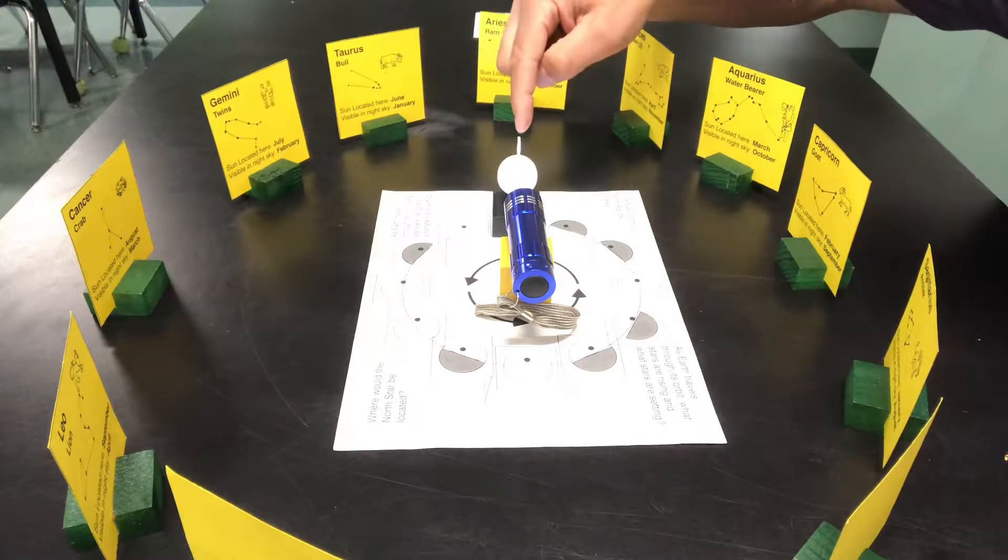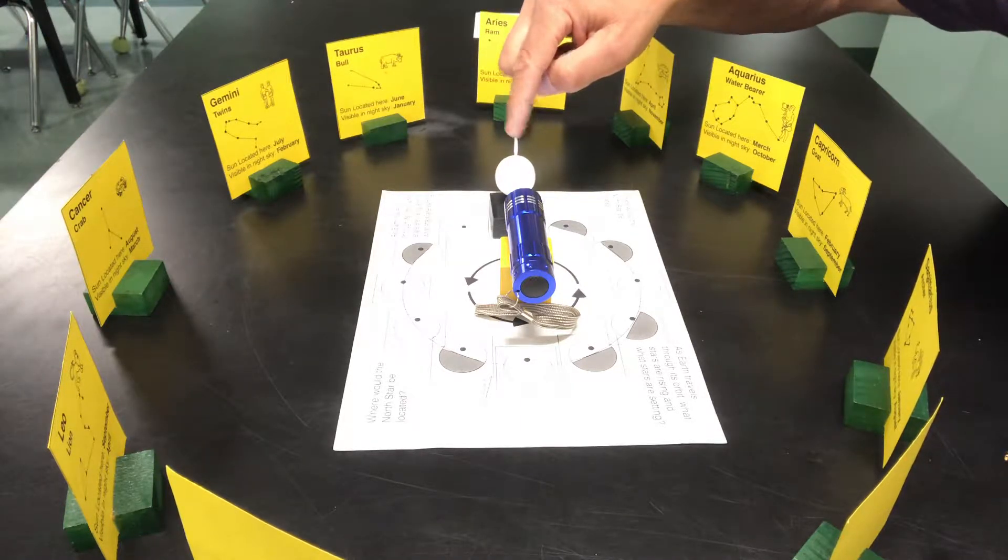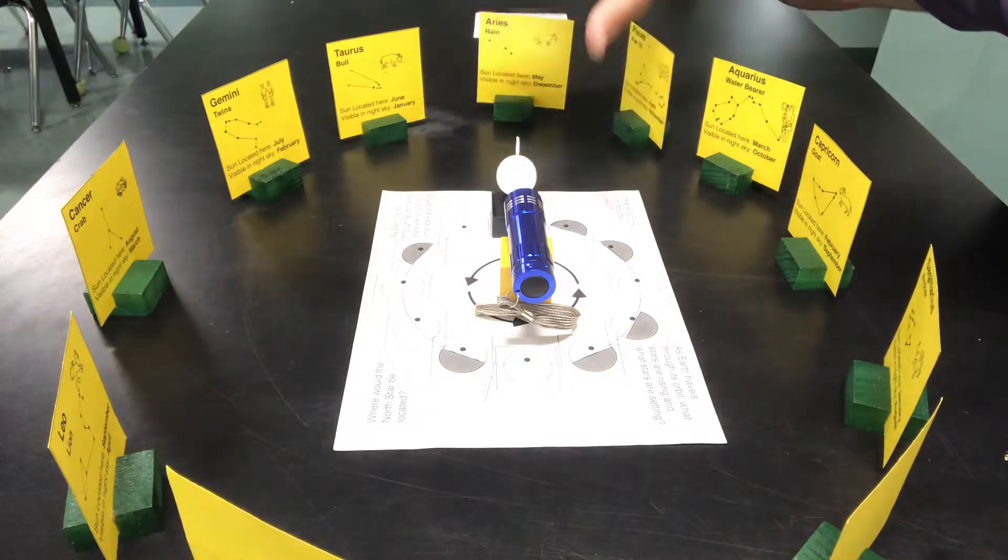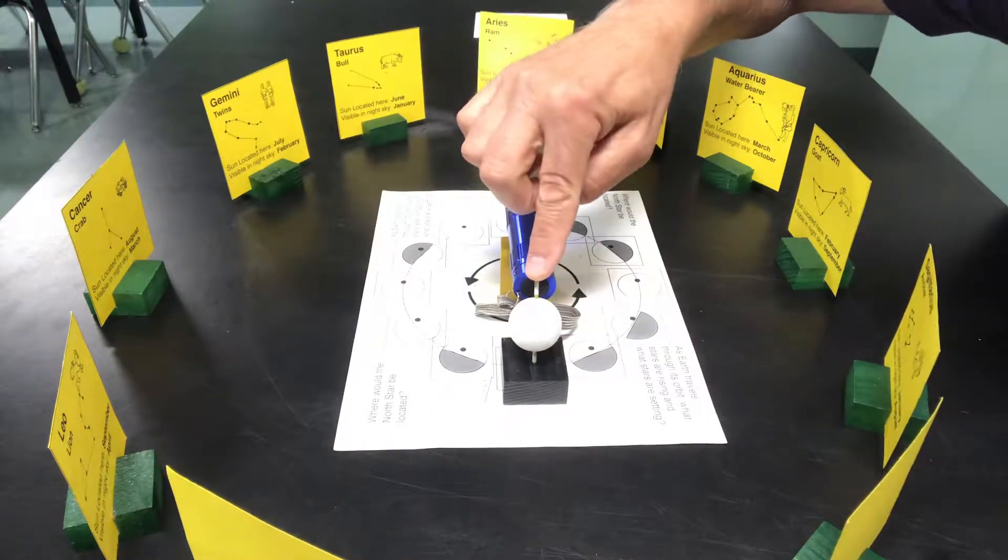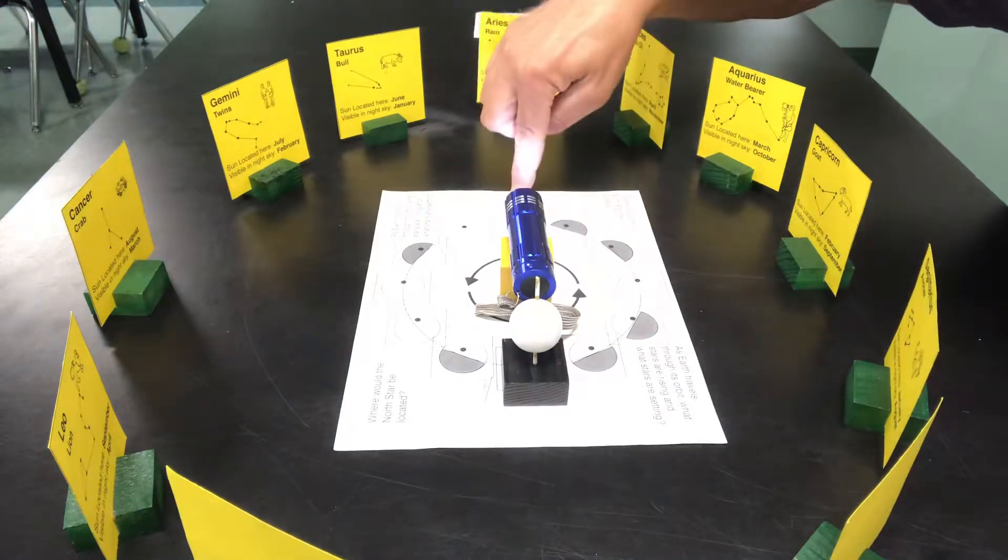And so in this position, the North Pole in December is tilted away from the sun. And by the time it comes around here, it's tilted toward the sun. So we've got these two extremes.